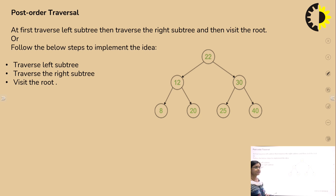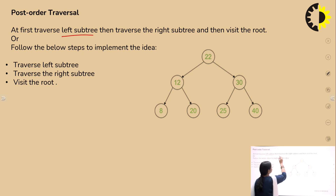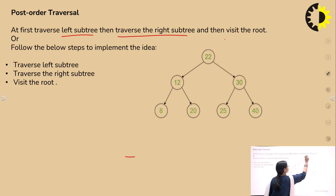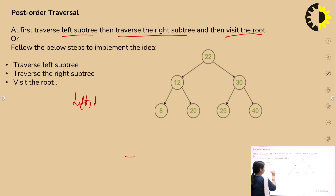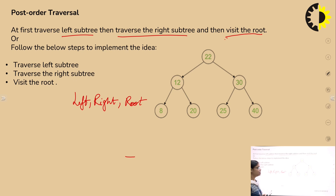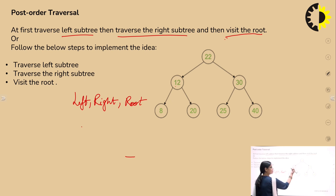The third type is postorder traversal. In postorder traversal, we follow the rule: first traverse the left subtree, then traverse the right subtree, and then visit the root — that is, left, right, root. Starting from the leftmost child, we begin with 8.